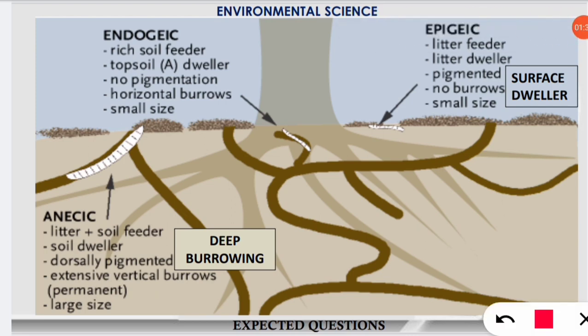There are three important categories of earthworms: endogeic, epigeic, and anecic types. Let's understand each one.